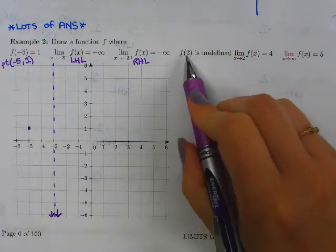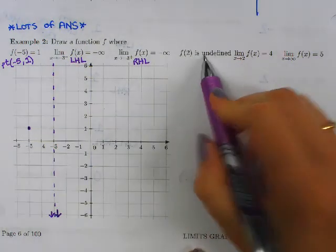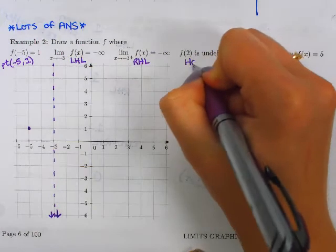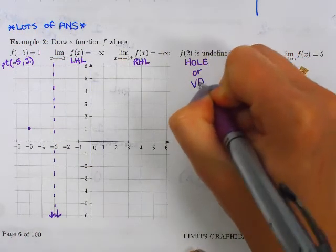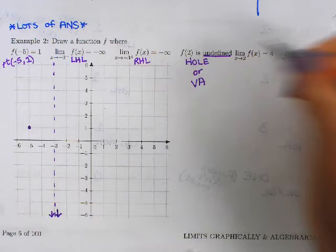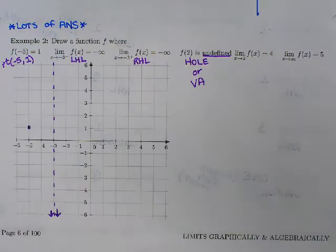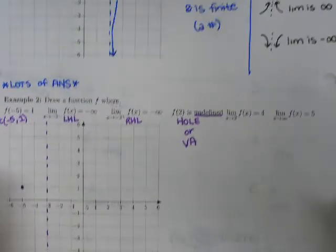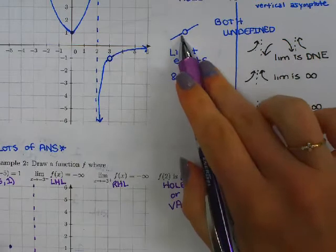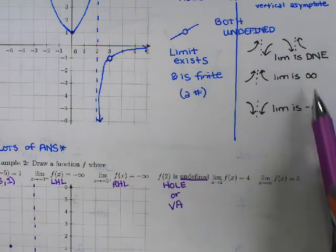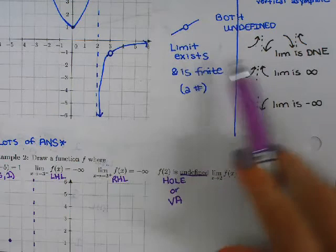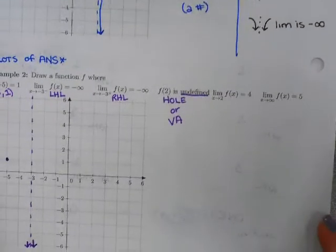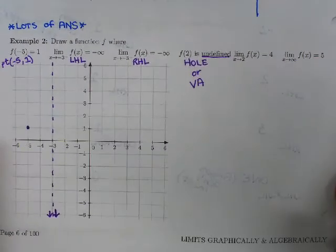And my next piece, f of 2 is undefined. I have to draw a hole or a vertical asymptote. How I know that is it's undefined. Two options: is it a hole or a vertical asymptote? And remember what we said before. If the limit is a number, I'm going to draw a hole. If the limit is DNE or either of the infinities, I'm going to draw a vertical asymptote. They're both undefined. They just have different limits to tell you which one to draw.